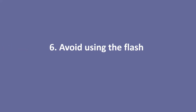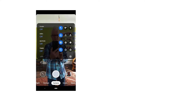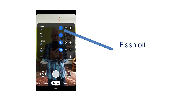Number six: avoid using the flash. You've probably got it turned on auto flash at the moment. If you look at the screen in the camera app, you'll see choices where you can turn the flash off. The A icon means automatic — that means the camera is deciding when to flash. Don't do that. You decide when you want to use the flash. Most of the time you don't need it. When you do need it, turn it on using the icon on the right.